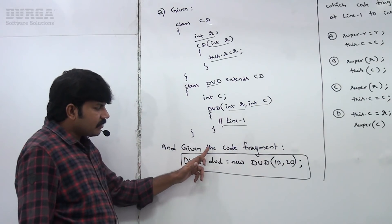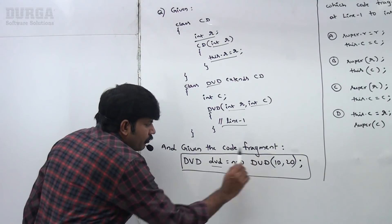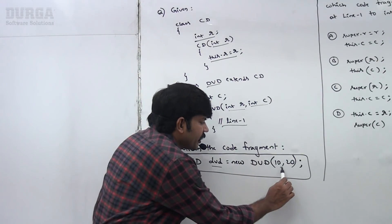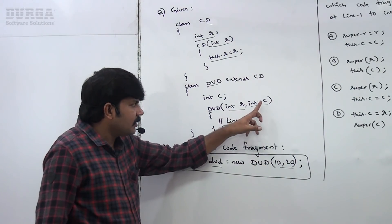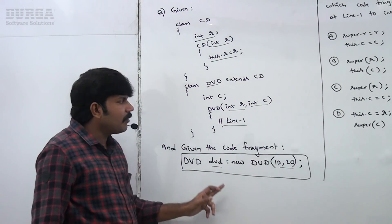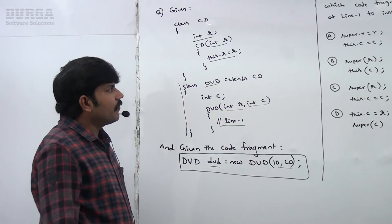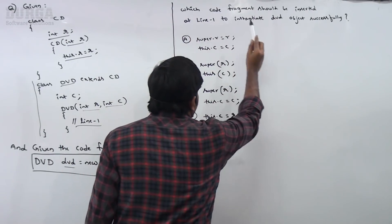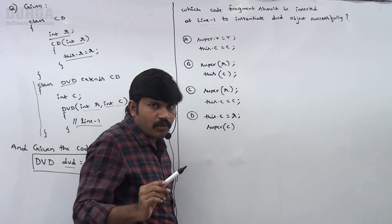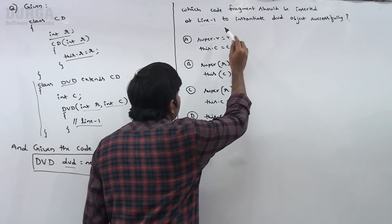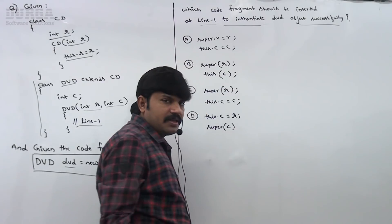Given the code fragment: DVD dvd = new DVD(10, 20). So R will become 10 and C will become 20. I am creating an object for the child class. Now, which code fragment should be inserted at line 1 to instantiate the DVD object successfully?